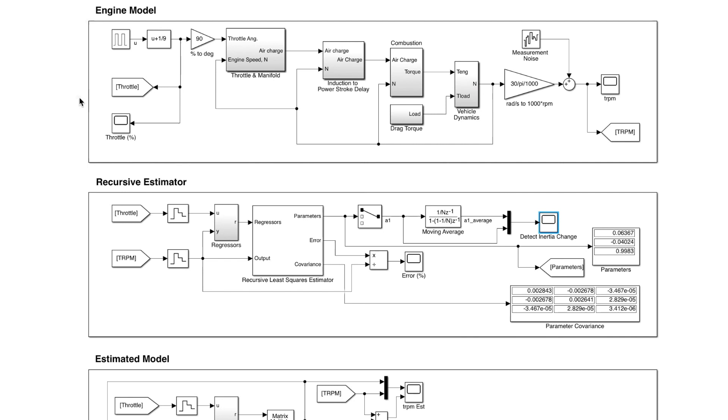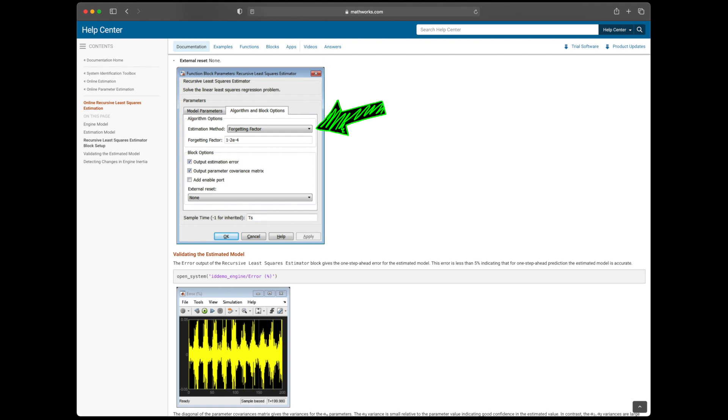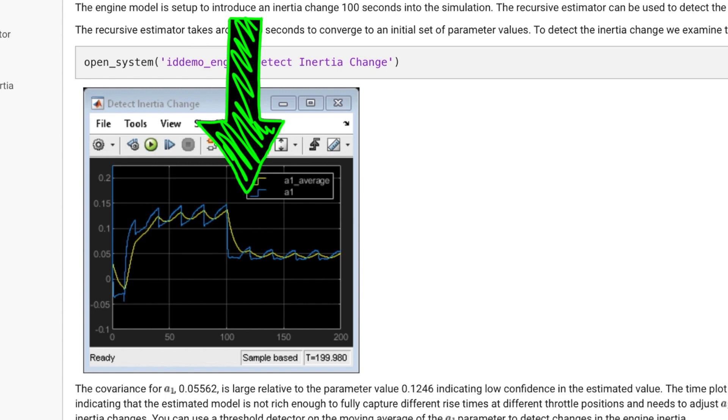And by the way, I used a Kalman filter here since that's what we talked about in the video. But if you run the default example, you'll see that it uses the forgetting factor algorithm, which converges much faster in about 50 seconds or so initially, and then just about 15 seconds when the inertia changes.